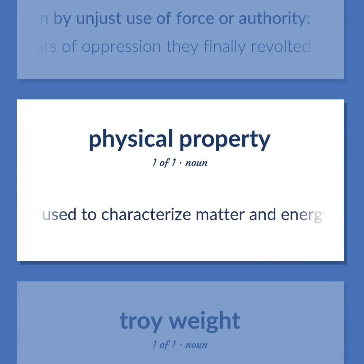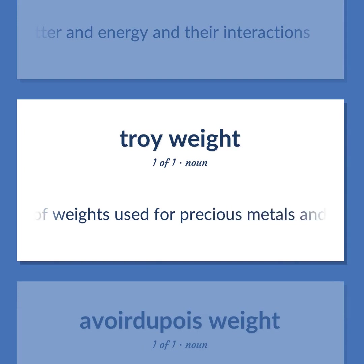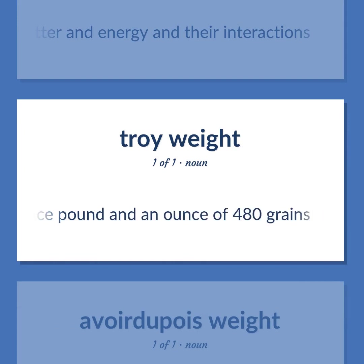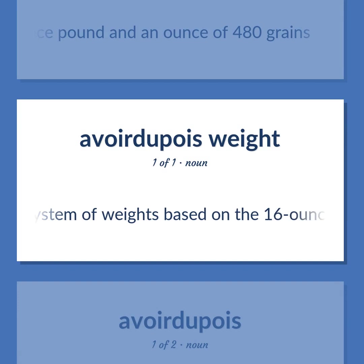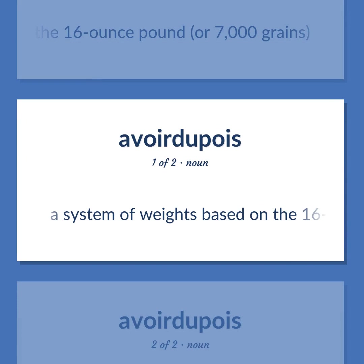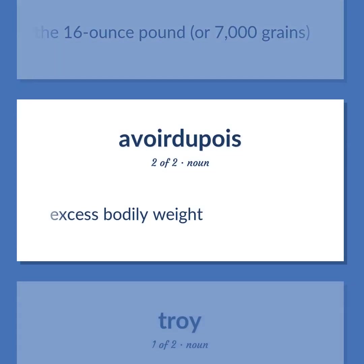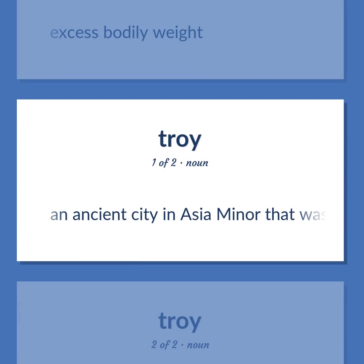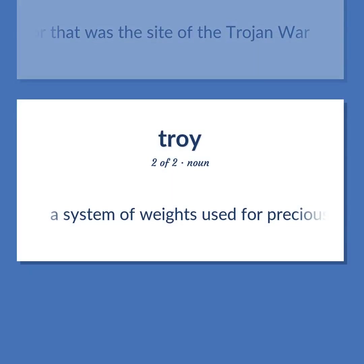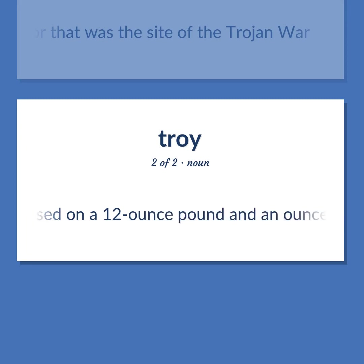Weight systems: Any property used to characterize matter and energy and their interactions. Troy weight: a system of weights used for precious metals and gemstones, based on a 12-ounce pound and an ounce of 480 grains. Avoirdupois: a system of weights based on the 16-ounce pound or 7,000 grains. Excess bodily weight. An ancient city in Asia Minor that was the site of the Trojan War. Troy weight: a system of weights used for precious metals and gemstones, based on a 12-ounce pound and an ounce of 480 grains.